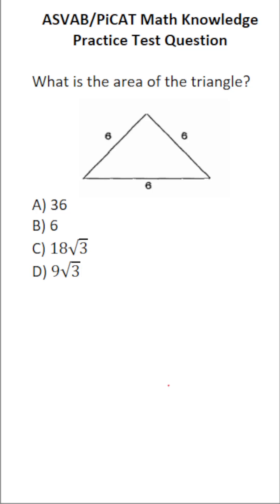This math knowledge practice test question for the ASVAB and PICAT says, what is the area of the triangle? To find the area of a triangle, you're always going to use this formula: Area equals one half base times height, where the base is right here. In this case, it's going to be six.